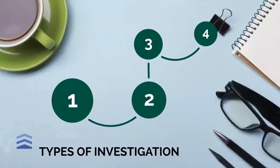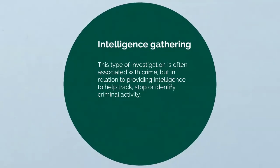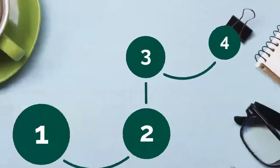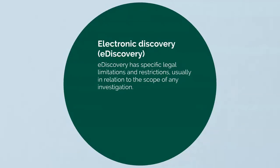The second type is intelligence gathering. This type of investigation is often associated with crime, but in relation to providing intelligence to help track, stop, or identify criminal activity. Unless the evidence is later to be used in court, forensic soundness is less of a concern in this form of investigation. Instead, speed can be a common requirement.